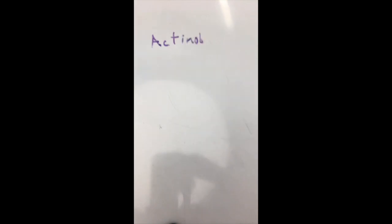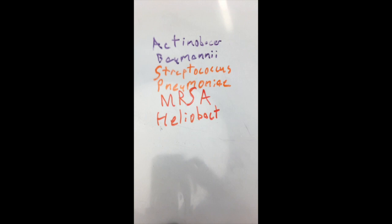This video presents four bacteria on this list. One from the critical level, Acinetobacter baumannii. One from the medium level, Streptococcus pneumoniae. And two from the higher threat level, MRSA and Helicobacter pylori. This makes up the majority of the list.